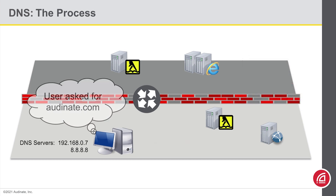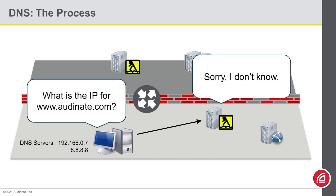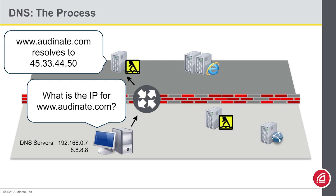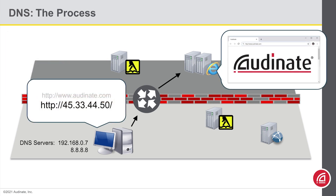Now let's follow along if I ask for audinate.com. Again, the first time, my computer won't know the IP address for this, so it will go down its list of DNS servers. My local server only remembers the DNS names for local devices, so it will report back that it does not have the answer. No problem — my computer has another DNS server to check with out on the internet. That DNS server responds with the answer, my computer remembers it, completes the connection, and retrieves the website for me.